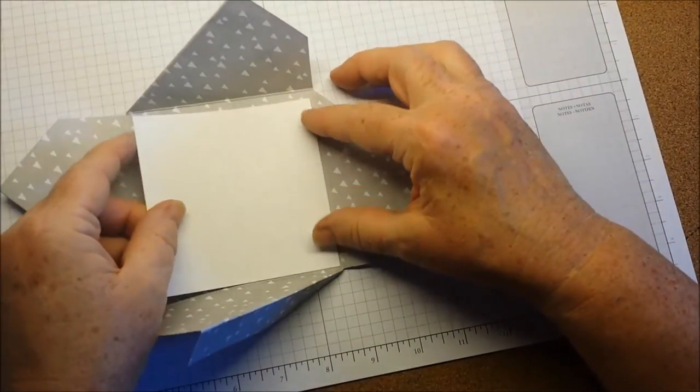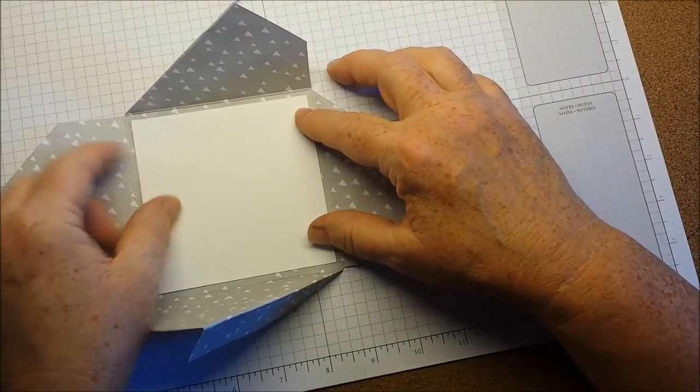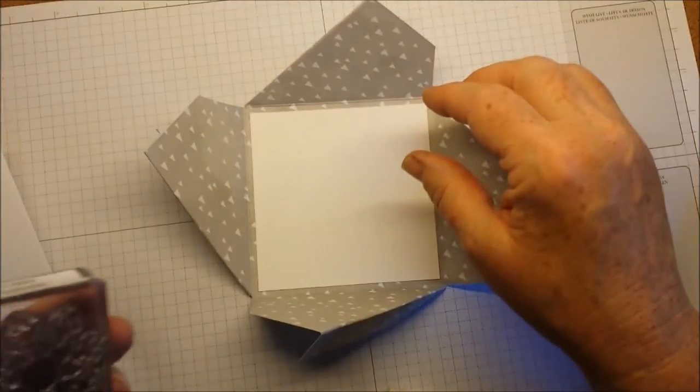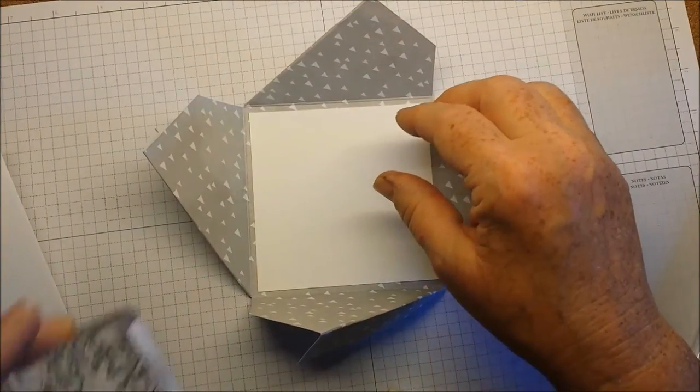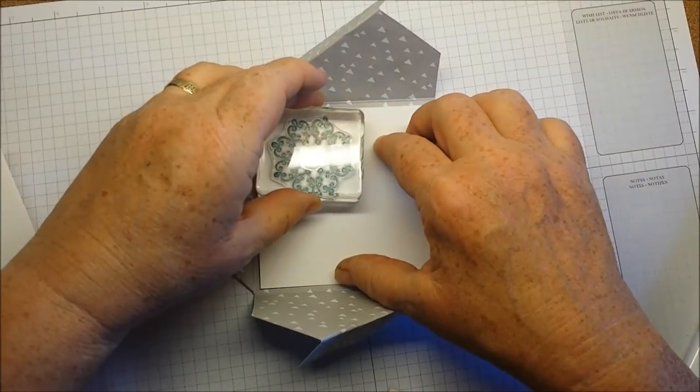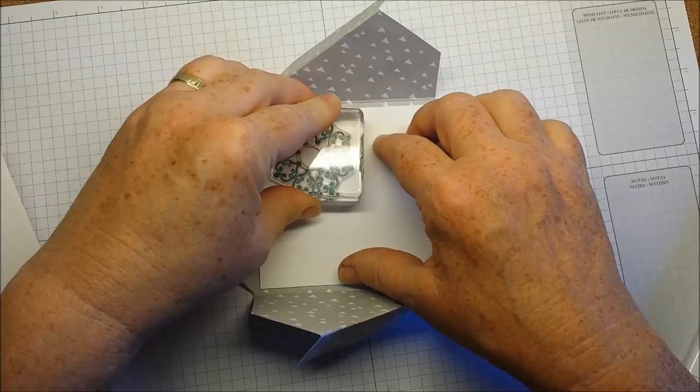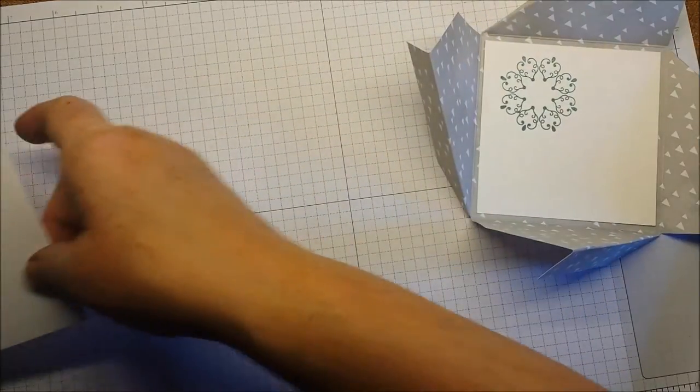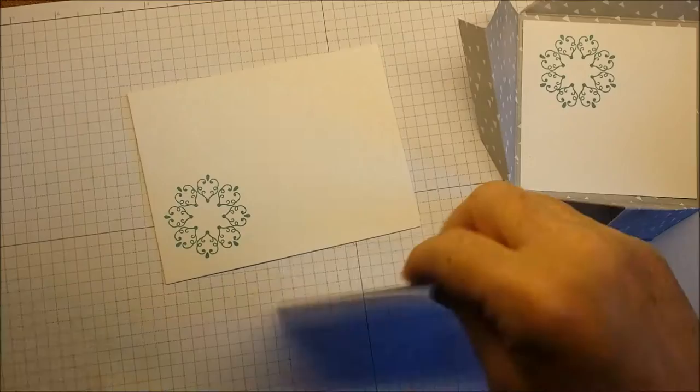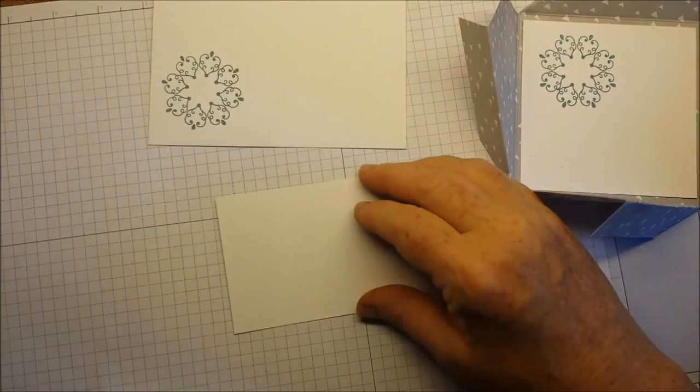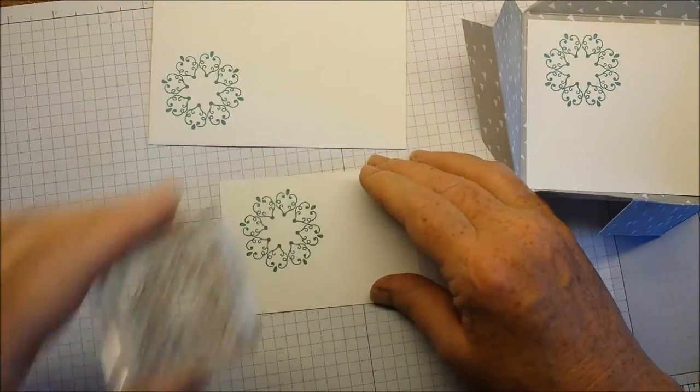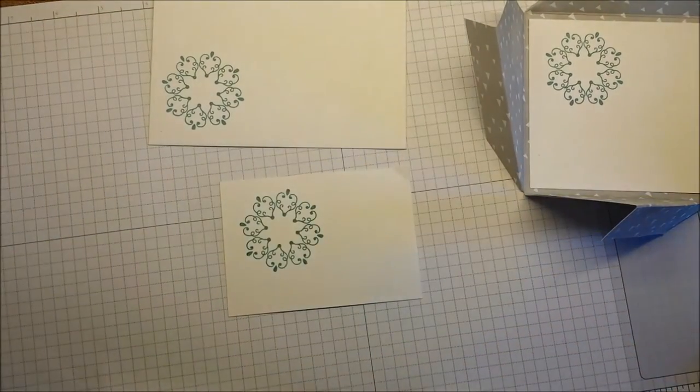I'm going to put a square in here. This is a 4 inch square of Whisper White cardstock. I'm stamping the medium snowflake from Letterpress Winter on that 4 by 4 and also on my envelope. And I'm stamping that same middle size on a scrap of Whisper White cardstock.